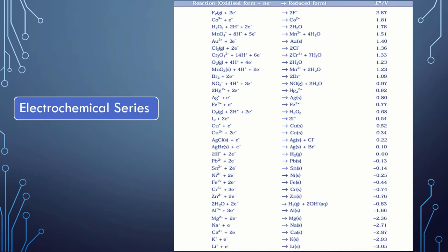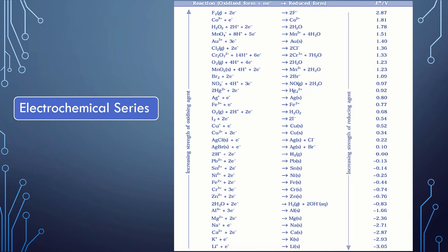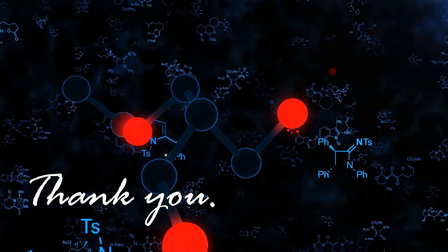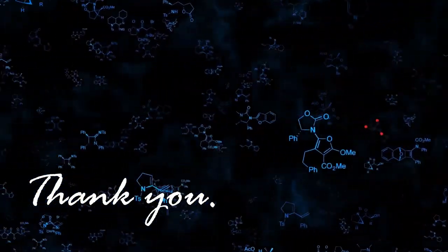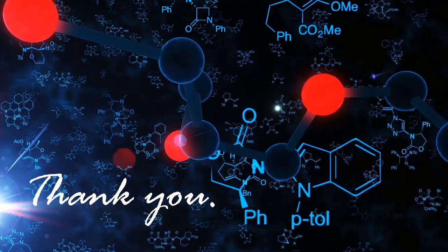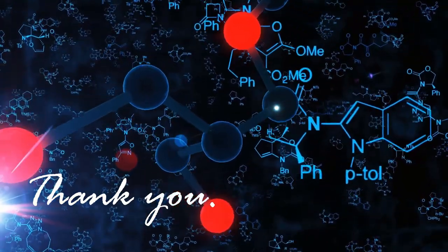The standard electrode potentials of a large number of electrodes have been determined using the Standard Hydrogen Electrode as reference — the electrode for which the electrode potential has been fixed as zero. The elements are written in increasing order of their standard electrode potentials (standard reduction potentials), and they constitute a series known as the electrochemical series.